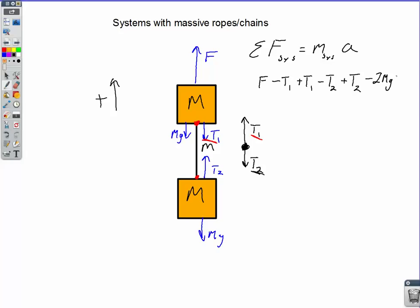And then we have both MGs going down. So we're going to do a minus 2 MG here. And we forgot the MG on the rope itself. We have a little mg pulling down. So let's put that in there, minus mg. And then that's all going to equal the total mass of the system. That would be 2M plus little m times A.